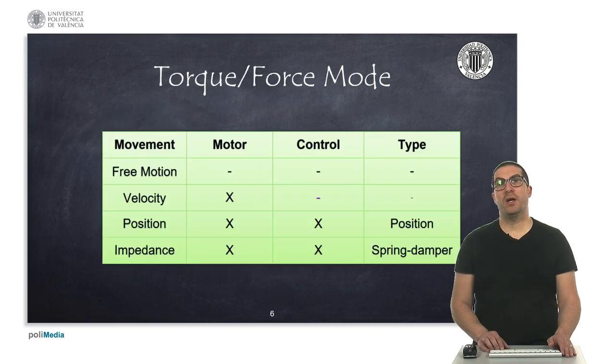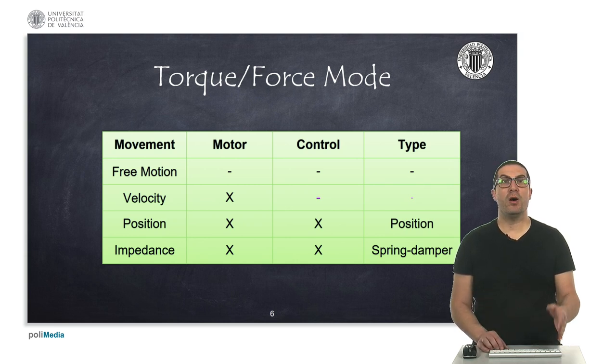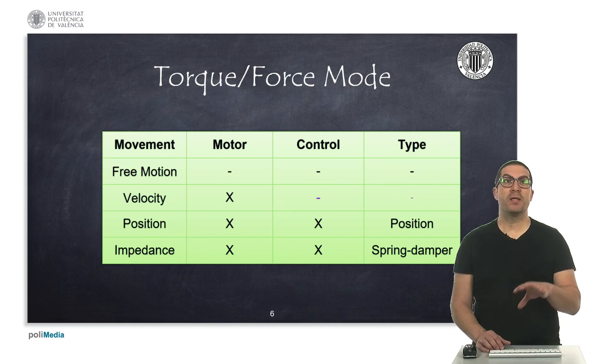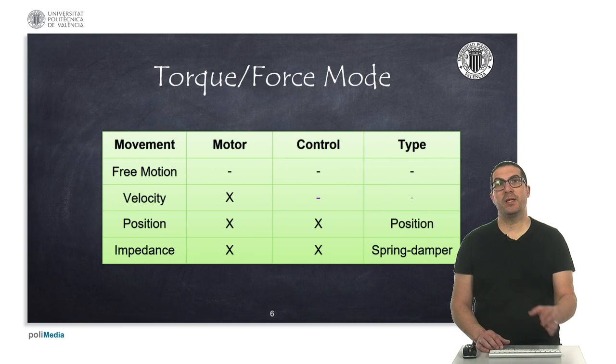When a joint is set in a torque force mode, it can have a free movement if there's no actuator. In the case of using a motor, then the speed of the joint can be modified or can be controlled if we do not activate the closed-loop control. But if we activate or enable the closed-loop control, then we can implement a position control using a PID or we can implement an impedance control acting as a spring damper.